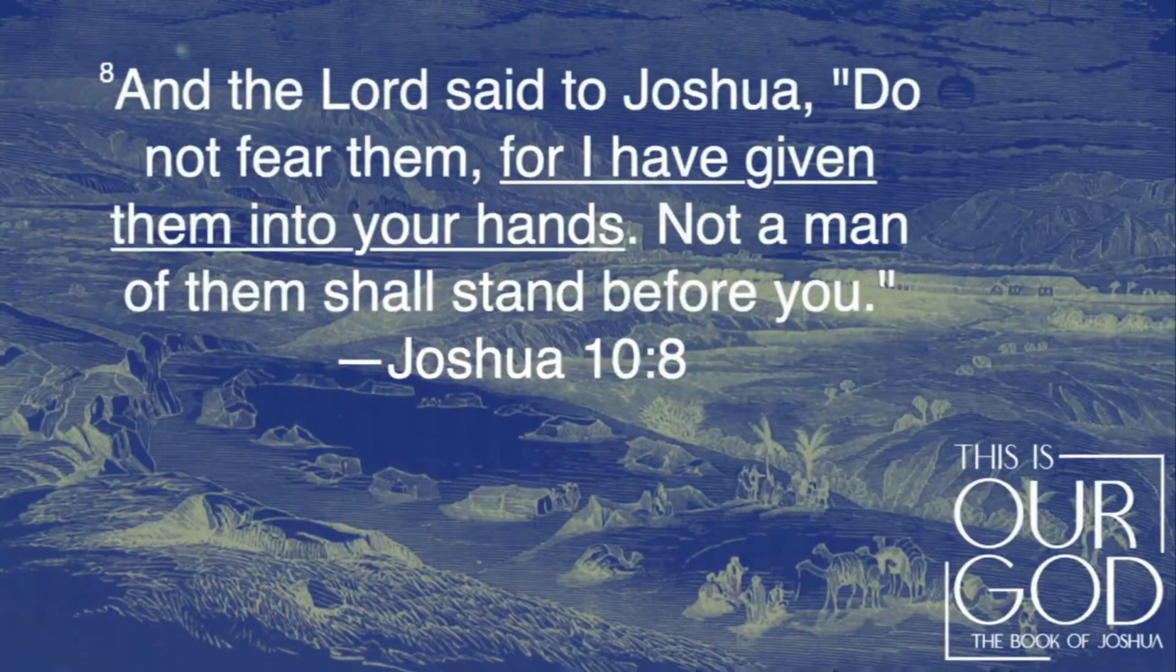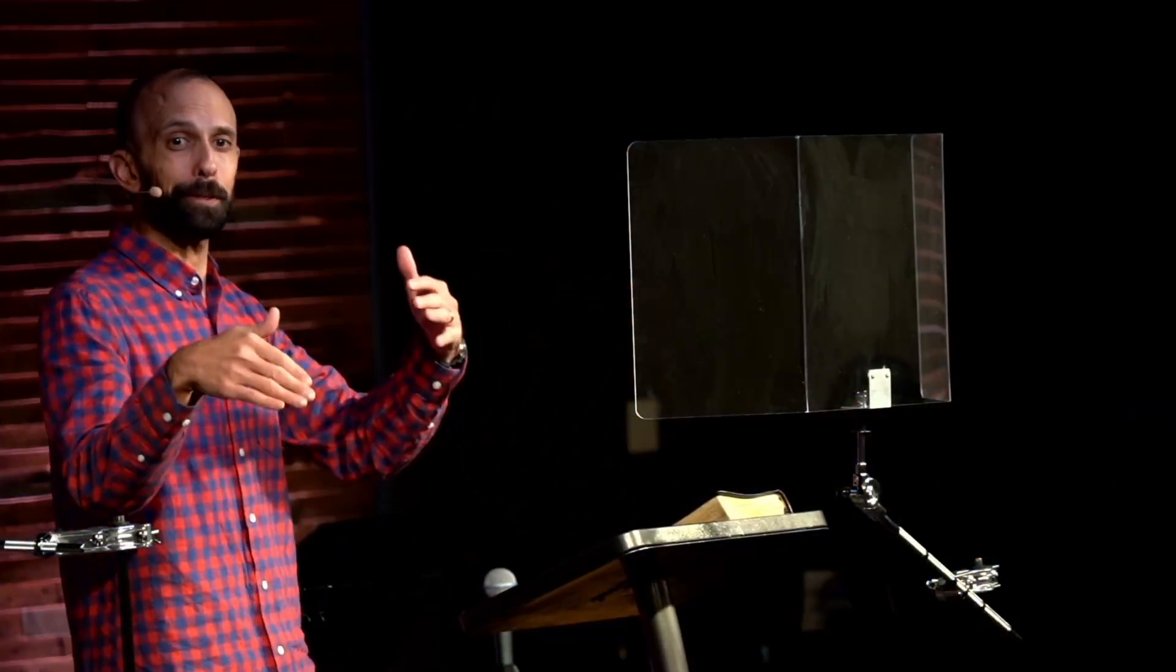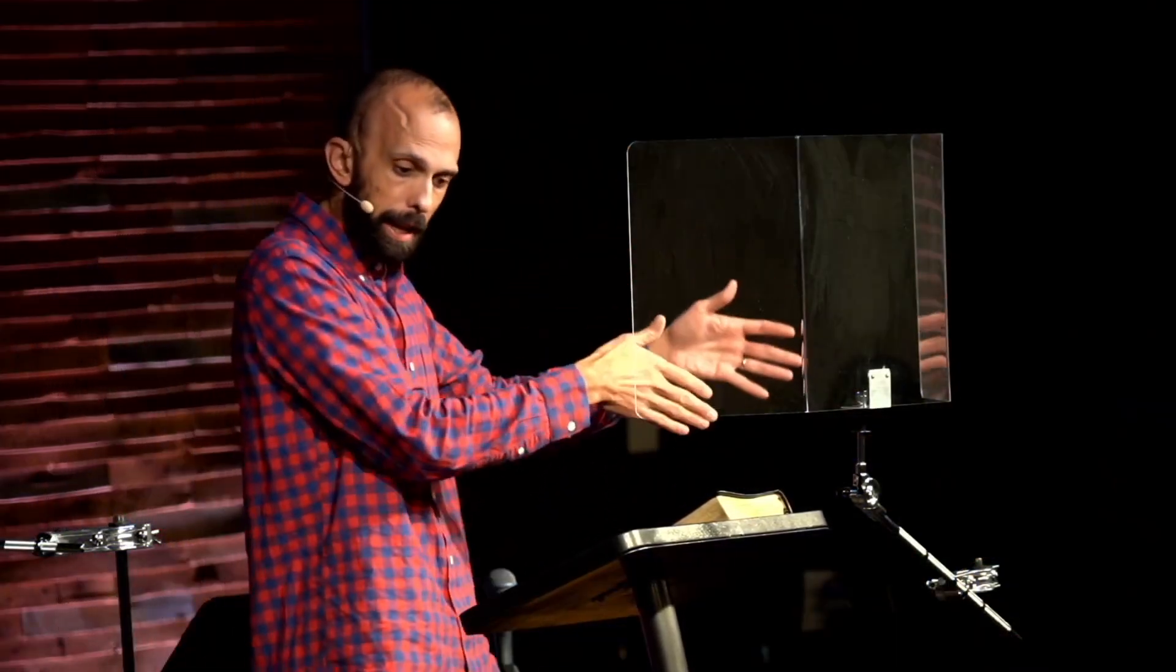And that theme is even underscored by other areas of repetition in the text, where there's kind of this formula where the Lord says, I'm going to have you go up against this king and this people, and each time he says, I have given such and such into your hand. Six times I count it in the book of Joshua where the Lord does this. So that's the big idea right there. It's this underscored theme of, don't be afraid because the Lord fights for you.